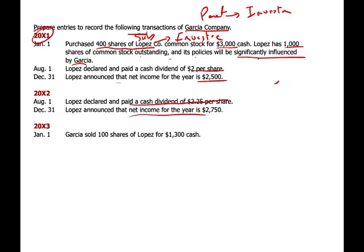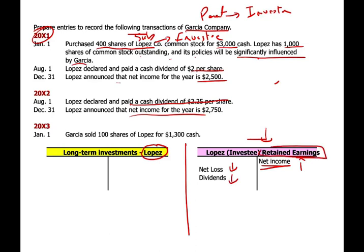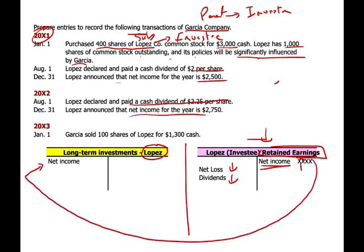We need to journalize these entries. Garcia will have a long-term investment in Lopez. Lopez, the investee, will report earnings. When Lopez has income, retained earnings goes up; when there's a net loss, retained earnings goes down; when there's dividend, retained earnings goes down. For Garcia's investment account: 40% of net income increases Garcia's investment in Lopez; 40% of a net loss reduces the investment; and dividends reduce the investment. The T-account for Lopez's long-term investment is established at $3,000.